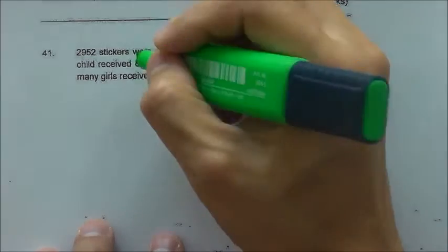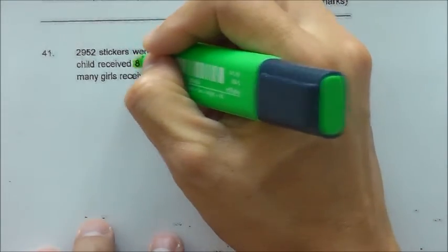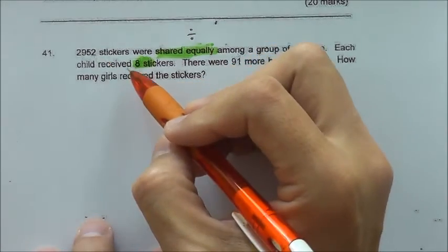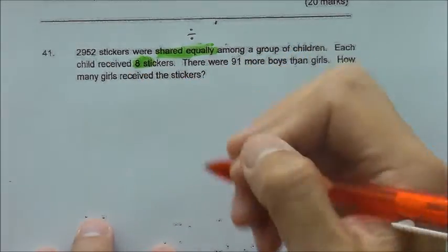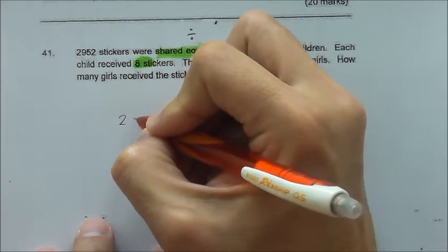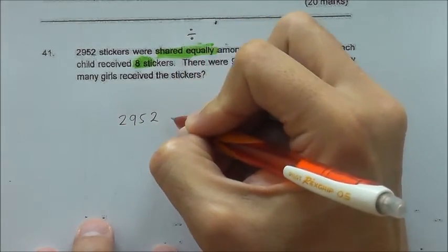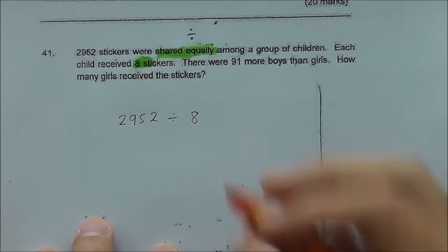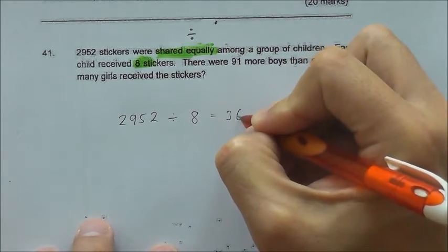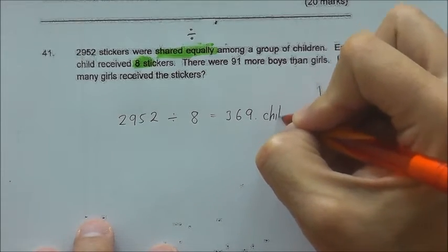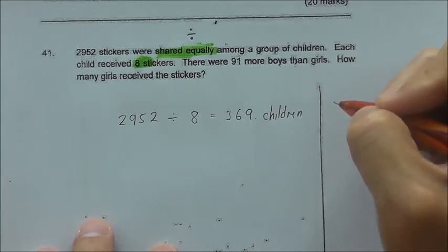Each child received 8 stickers. If we take the total divide by 8, we will be able to find the total number of children. So that will be 2,952 divided by 8, and the answer that we will get is 369. So altogether there are 369 children.